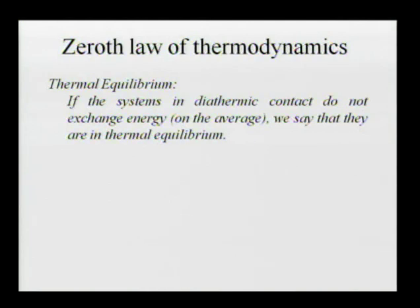Thermal equilibrium refers to something else — it refers to interaction on the microscopic scale. Thermal equilibrium refers to what happens between or among the atoms of two systems which are interacting. If we bring two systems into contact and, on average, these two systems do not exchange energy, we say that they are in thermal equilibrium.